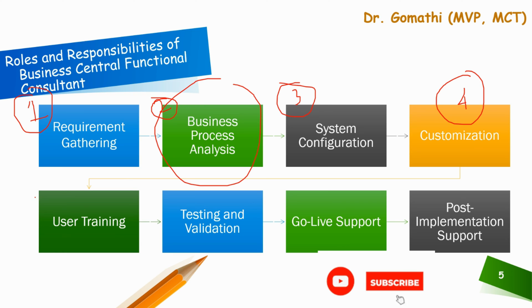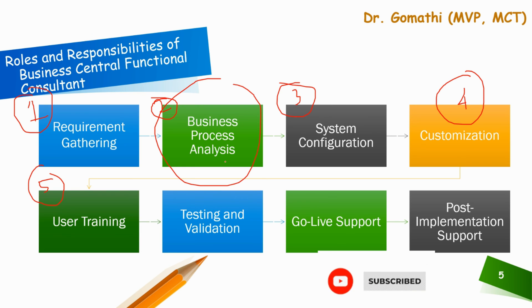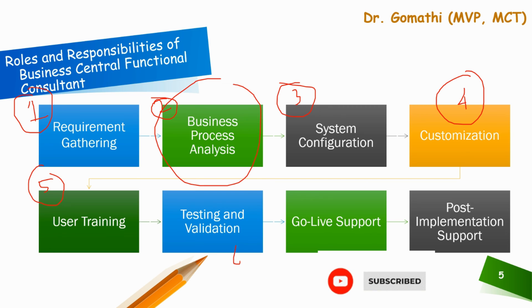The fifth phase is user training. As the system configuration progresses, you conduct training sessions for store supervisors and warehouse staff. You demonstrate how to use Business Central to perform tasks such as receiving stock, processing sales orders, and conducting physical inventory counts. The training emphasizes the importance of accurate data entry to maintain inventory accuracy.